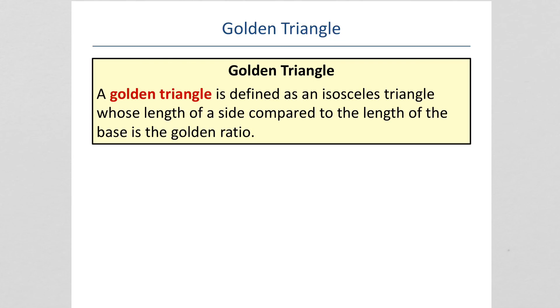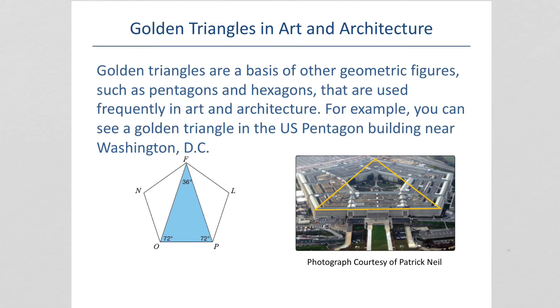A golden triangle is defined as an isosceles triangle. So, two sides are the same. Whose length of a side compared to the length of the base is the golden ratio. And golden triangles are the basis of other geometric figures, such as pentagons and hexagons, that are used frequently in art and architecture, like the U.S. Pentagon, is made up of these golden triangles.